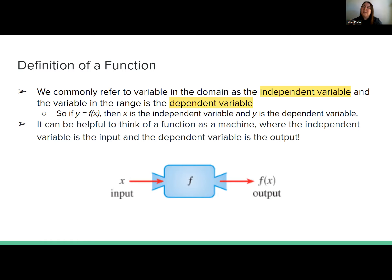The rule — the machine we're talking about — this is going to be f of x is equal to x minus 1. x minus 1 would be the machine, the actual thing that is going to give you a new output.